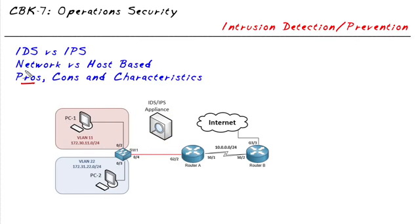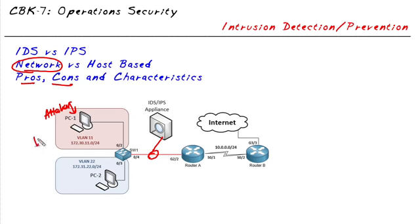One of the pros of using network-based IPS is that we're covering a whole bunch of computers' network traffic at once. The negative is we aren't seeing what's happening on any individual computer — if an attacker is locally sitting at a computer, a network-based IPS won't see that local activity. Host-based IPS does see local activity, but it runs as an application with some performance overhead, and protecting 10,000 computers means buying licenses and installing software on each one — so cost and overhead are greater than network-based solutions.